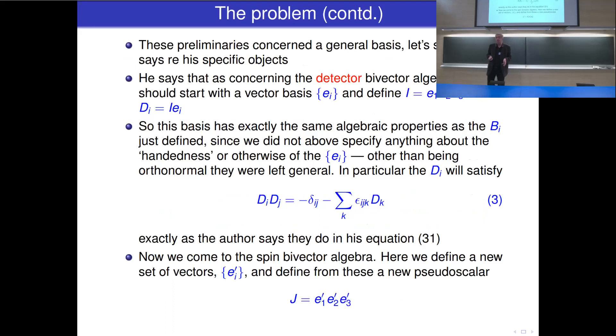So these preliminaries concern a general basis. Let's see what Joy Christian says about his specific objects. As concerning the detector bivector algebra, the d's, you should start with the basis e i, define this thing we've just been talking about, and d is I e i. So this has exactly the same algebraic properties as b i. Since we didn't specify anything about the handedness or otherwise of the e i, other than being orthonormal, they were general. And in particular, the d's will satisfy this equation here with a minus.